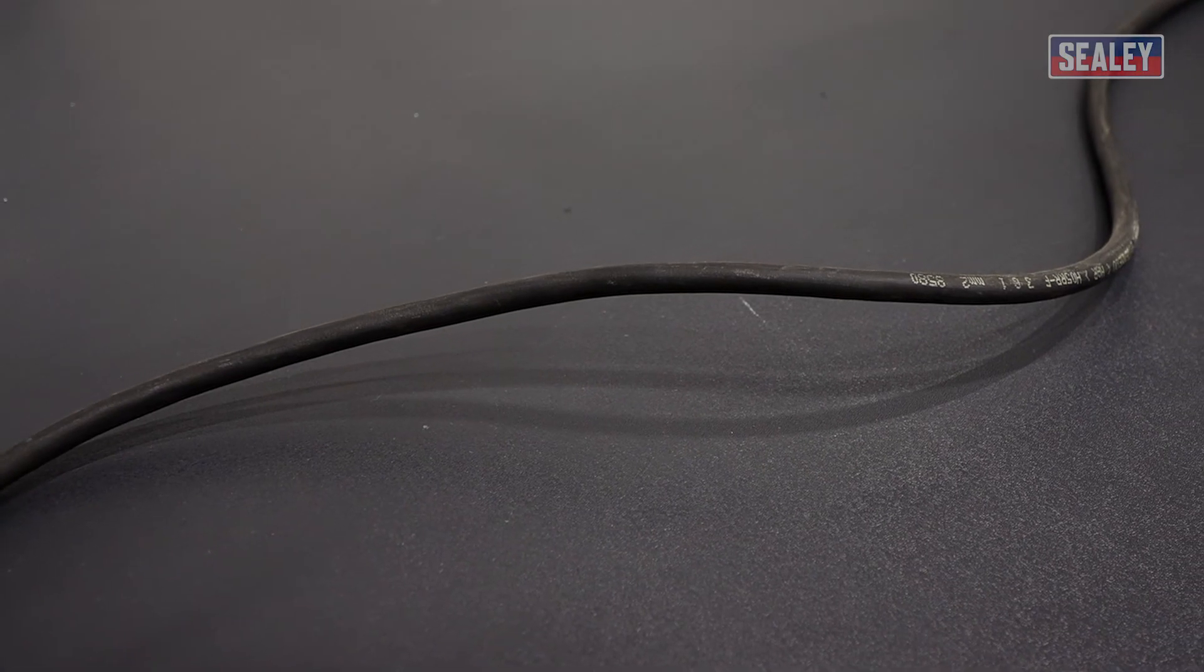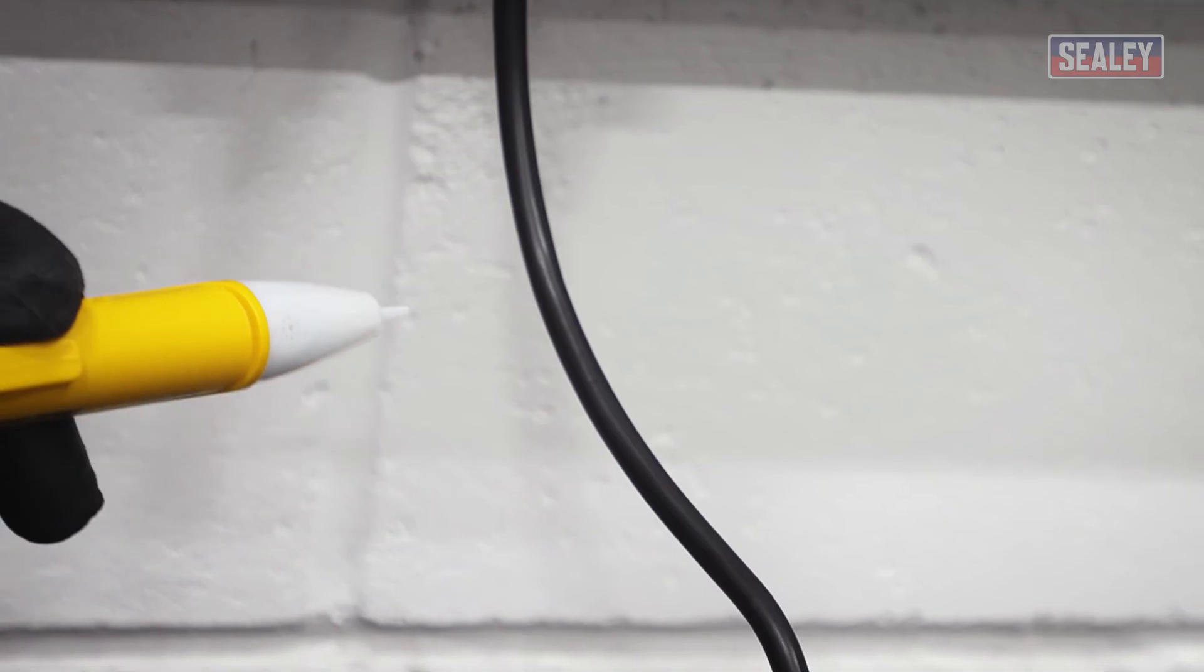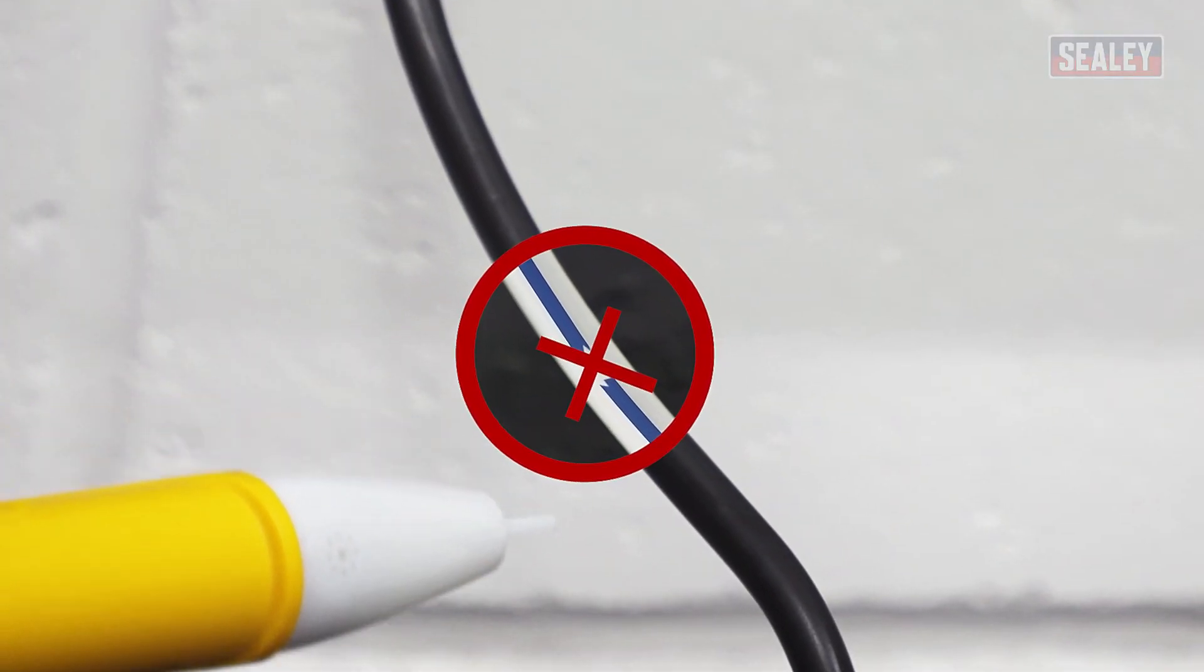Insulated cores may be checked for continuity breaks. Just run the unit along the line and when the indicators go off, it's the break point within the wire.